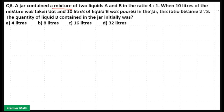A jar contained a mixture of two liquids A and B in the ratio 4 is to 1. When 10 liters of the mixture was taken out and 10 liters of liquid B was poured into the jar, this ratio became 2 is to 3. The quantity of liquid B contained in the jar initially was?